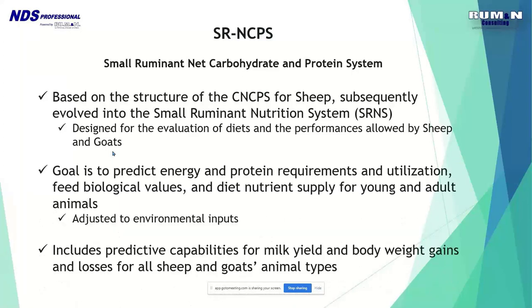The goal for the small ruminant CNCPS is to predict energy and protein requirements and utilization, feed biological values, and diet nutrient supply for young and adult animals, adjusted to environmental inputs. It includes predictive capability for milk yield and body weight gains and losses for all animal types.